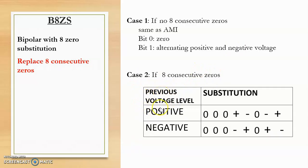If the previous voltage level is positive, then the substitution pattern will be: zero, zero, zero, positive, negative, zero, negative, positive.